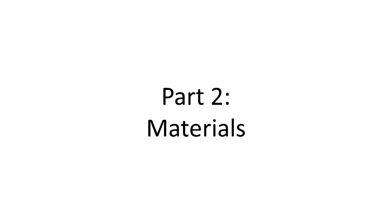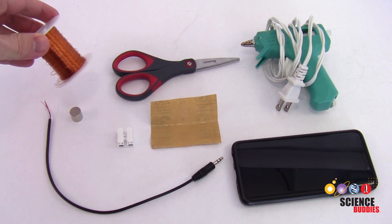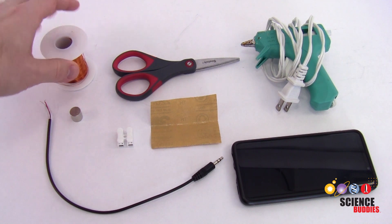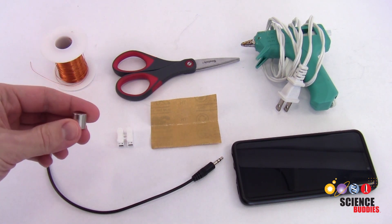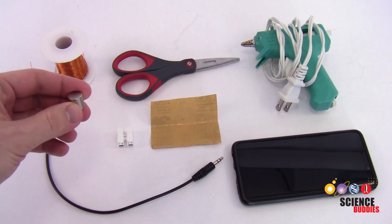First, let's go over the supplies you will need to build your speaker. You are going to need 30 gauge enameled magnet wire—enameled meaning this has insulation on it, it is not bare wire. A one-half inch diameter by one-half inch long neodymium magnet. These magnets are very strong, make sure you keep them away from small children and pets.